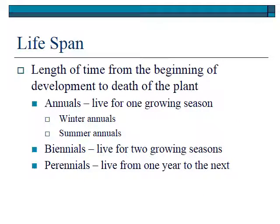Lifespan is an important point. Does the plant live just one year? It would be called an annual. If it lives two years, it would be biennial. And one that persists year after year is a perennial — if it lives more than two years, it's called perennial. So: annual, biennial, or perennial.